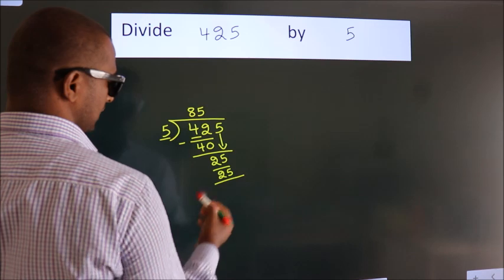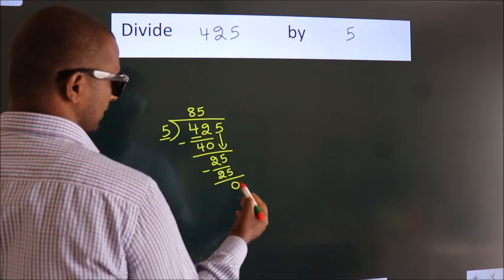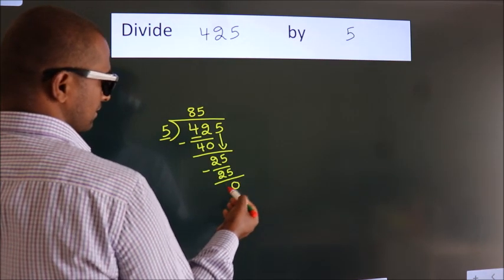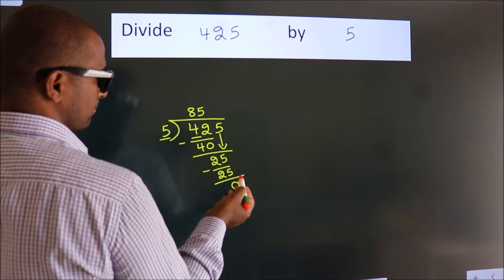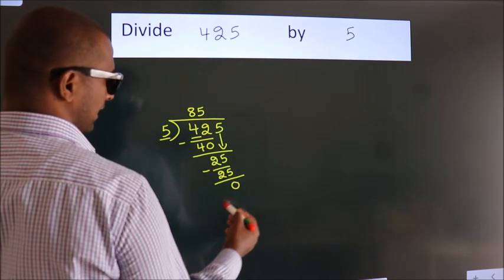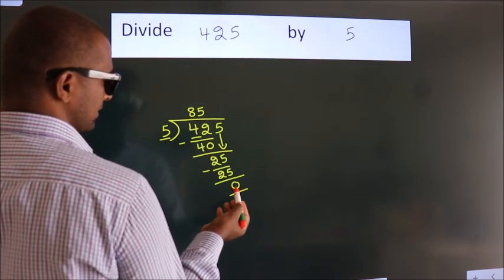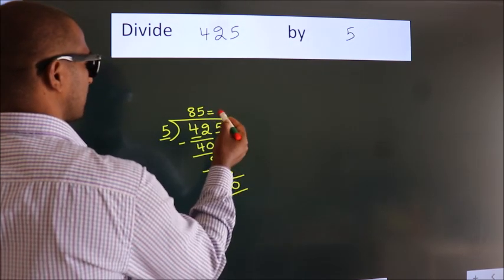Now, we subtract. We get 0. After this, no more numbers to bring down. And we got remainder 0. So, this is our quotient.